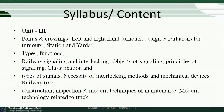Unit number three is related to points and crossing, station and yards — which is our today's topic — railway signaling and interlockings, various types of signals and their functions, and various modern techniques of maintenance of railway tracks.